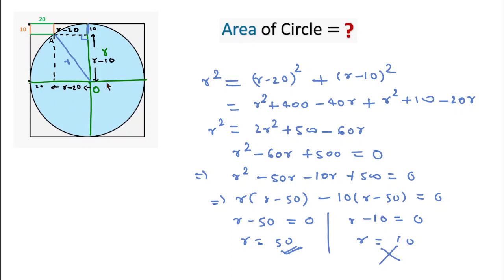Since we have to find the area of the circle, we can write area of circle equals πR squared, that is π into 50 squared, that is 2500π. This is the required answer for this question. Thanks for watching this video, and please like, share, and subscribe.